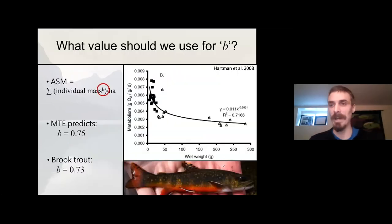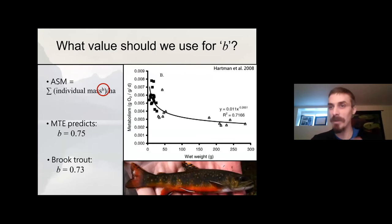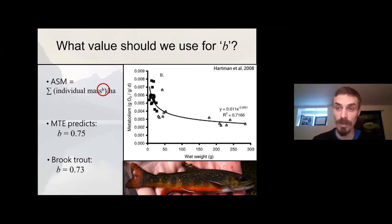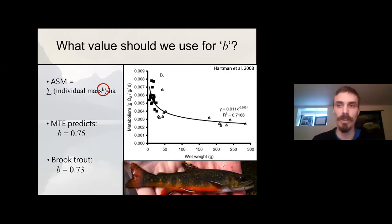What value should we actually use for B? When we published this study — the first to conceptualize eDNA production using these frameworks — we had no idea what the value of B actually is. But we could make educated guesses based on existing theory: the metabolic theory of ecology predicts B will be around 0.75. I went digging in the literature and found a study on brook trout demonstrating that metabolic rates scaled with a B value of 0.73. So that's what we used in our model when we calculated allometrically scaled mass.